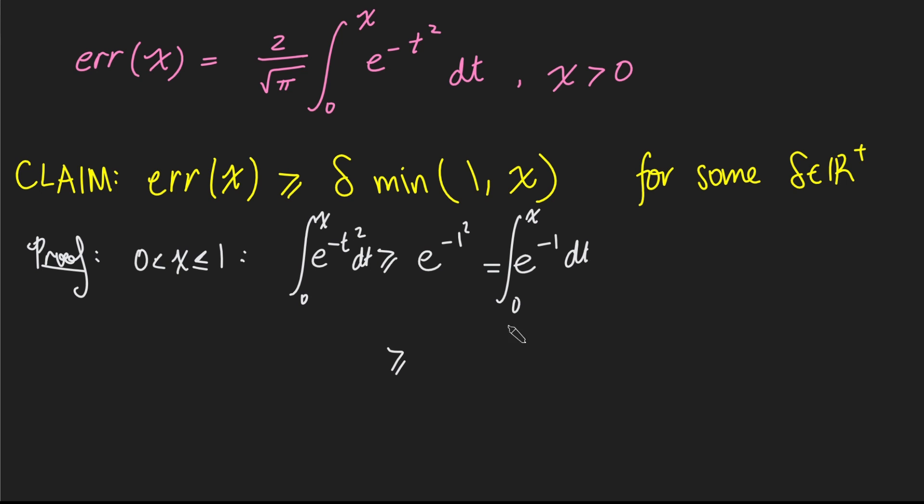we can say that this thing here is at least this thing here. Well, what is this thing? This thing is just a very simple integral, it's e to the negative 1 times x, because e to the negative 1 is just a constant. And now how about this guy over here?